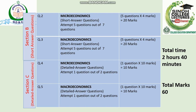In each of question number four and question number five, two questions are given from which you have to attempt only one, and that one question is for ten marks. If you add all marks from Section B and Section C, there will be a total of 60 marks. The total time for this part of the paper is two hours forty minutes, since 20 minutes were given to MCQs.